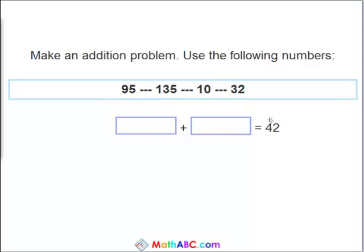Now we need to equal 42. Now again, 95 is bigger and so is 135. And here we have it. 10 plus 32 equals 42.